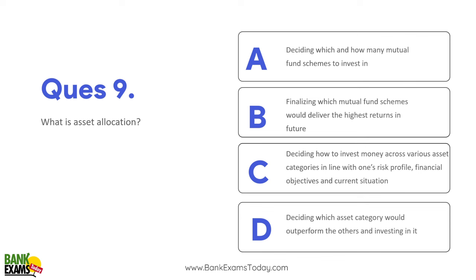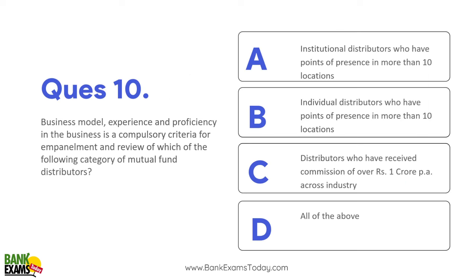What is asset allocation? It means deciding how much money to invest in different categories according to one's profile — gold, debt, equity, large cap, small cap. You are basically allocating your assets across different kinds of asset classes.